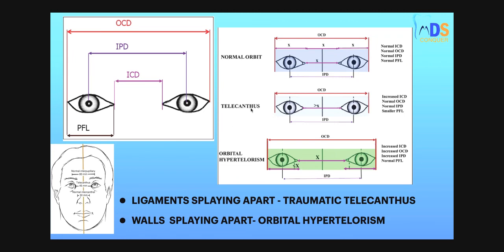Now we will see the difference between telecanthus and hypertelorism. In telecanthus, there is an increased intercanthal distance and a smaller palpebral fissure length. In orbital hypertelorism, there is increased intercanthal distance, increased outer canthal distance, and increased interpupillary distance, but normal palpebral fissure length. Traumatic telecanthus is caused by ligament splaying, while orbital hypertelorism is due to the medial walls of orbits splaying apart. Medial canthal ligaments on both sides splaying apart causes telecanthus.